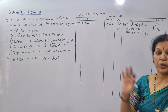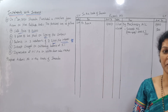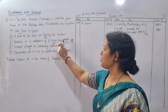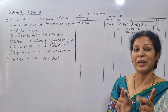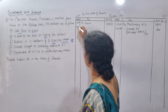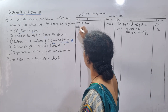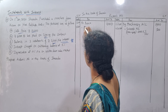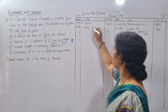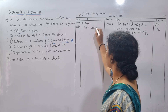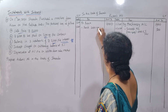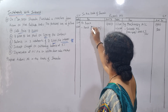Now one more entry on the debit side — the installment amount. The balance is to be paid in three installments of 2,000 each plus interest. So on 31st December 2020, to Bank: installment is 2,000 plus interest of 300, giving a total payment of 2,300.